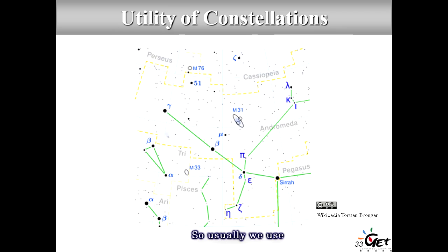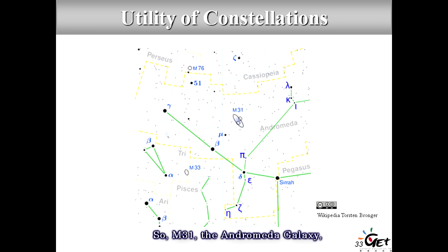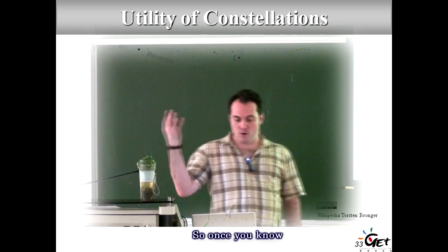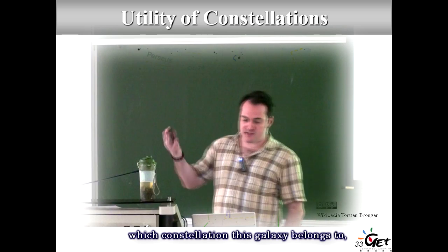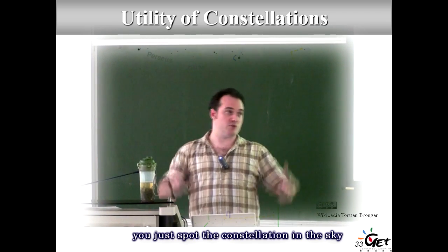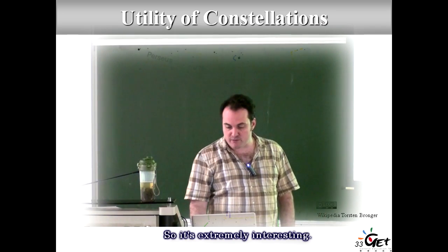Constellations are extremely useful because it's easier to remember a geometric form in the sky than the exact position of every individual star. We use constellations to spot very interesting objects — for instance to find M31. M31 is the Andromeda galaxy, in the constellation of Andromeda. Once you know which constellation an object belongs to, you spot the constellation in the sky and then find your object.